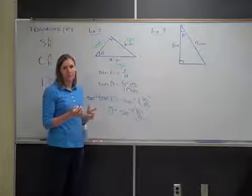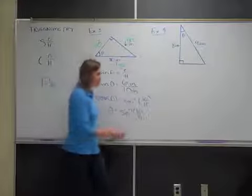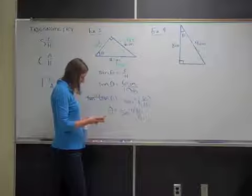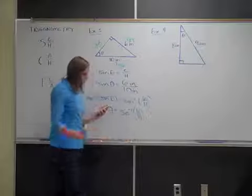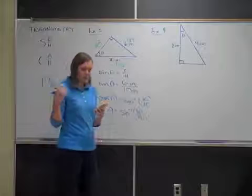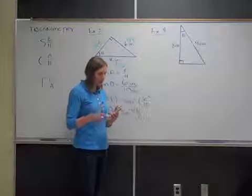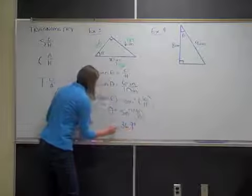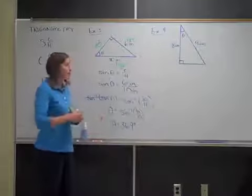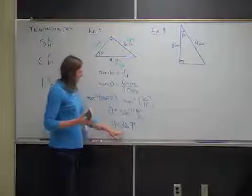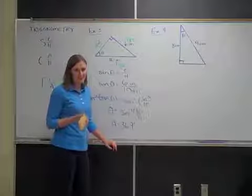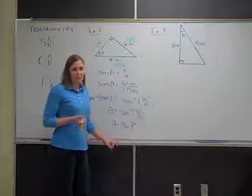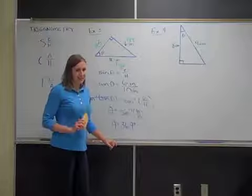The inverse sine is usually found right above or next to the regular sine button on your calculator. The inverse sine of 6 divided by 10 comes out to 36.869... Let's round to the nearest tenth: 36.9 degrees. So theta is 36.9 degrees — the measure of this angle. Note that drawings in geometry and trigonometry problems are not necessarily to scale; always go by what the picture is labeled, not what it looks like.